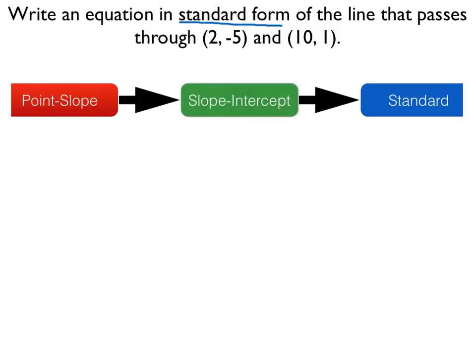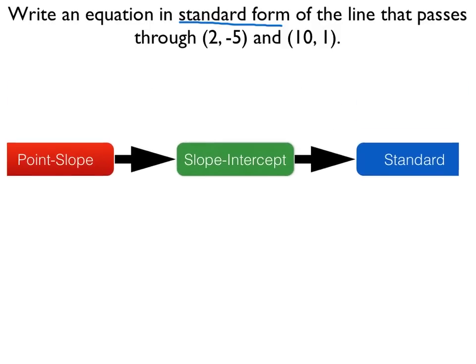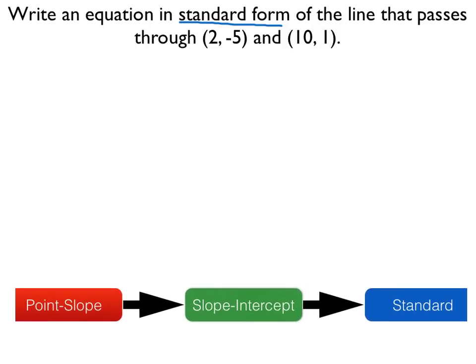However, in order to use point-slope form we need a point—well we have two—but we also need the slope. And so we'll need to use the slope formula using these two points in order to use this point-slope form of the line. So let's find the slope.